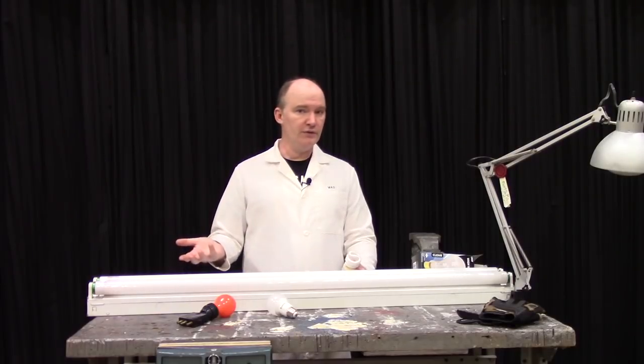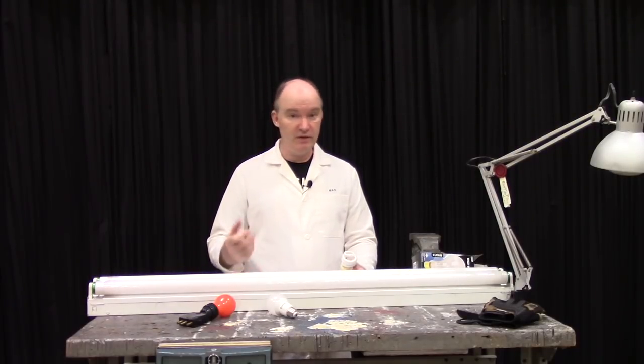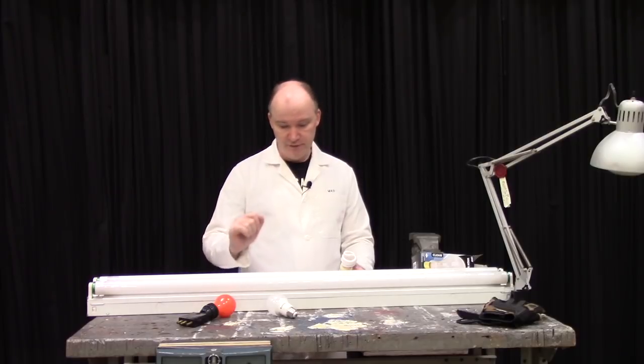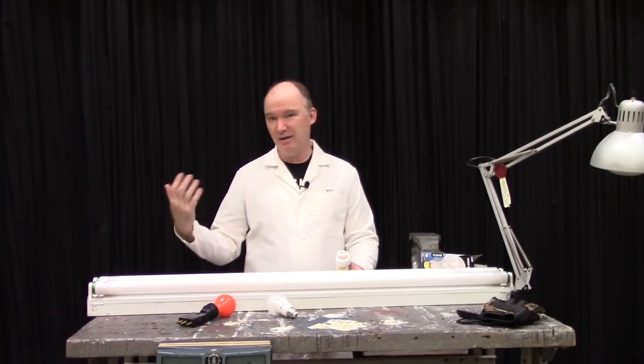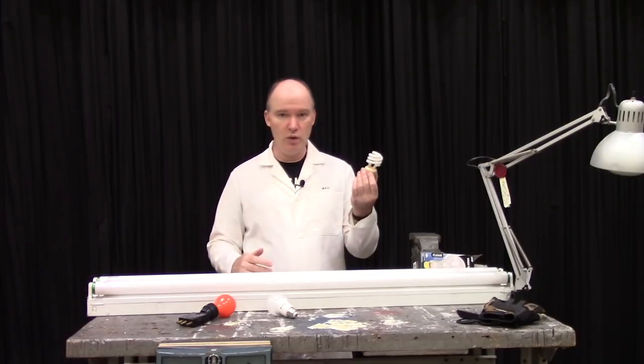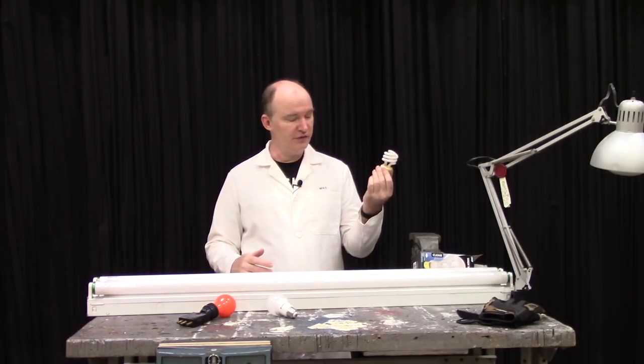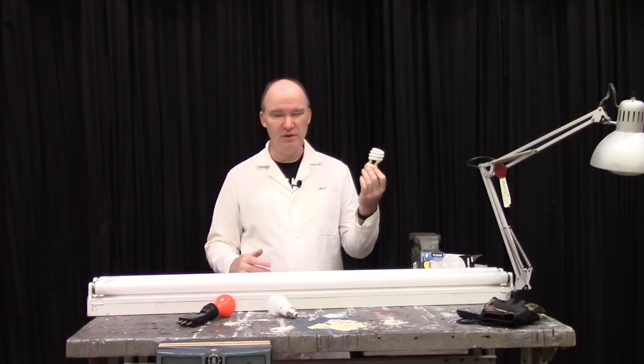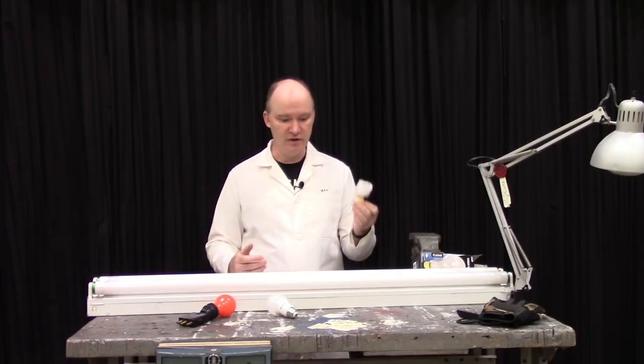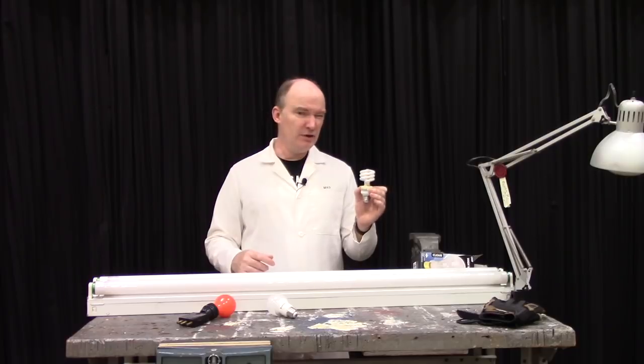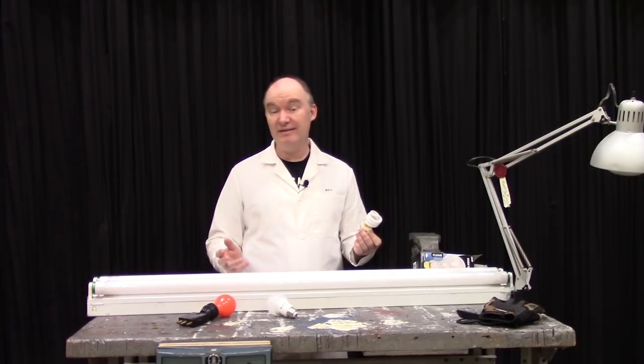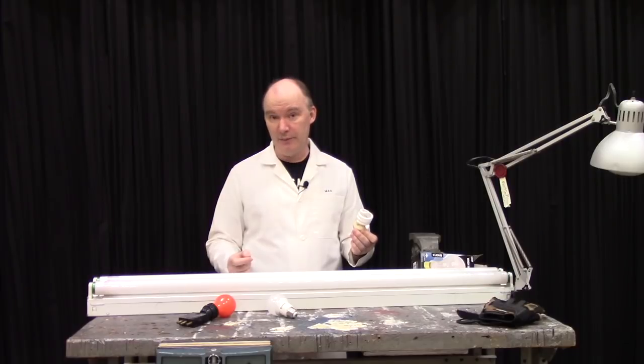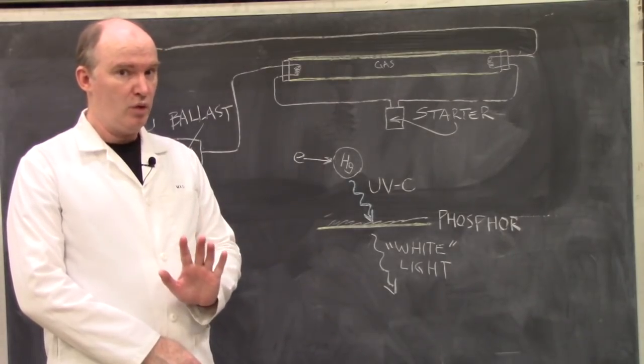So for all of those reasons, people started looking for other ways to produce light, and the first one we're going to talk about are fluorescents. These can take the form of these long tubes, like you see in classrooms or offices, or these little soft serve cone CFLs, which stands for compact fluorescent lamp, because, well, they're smaller. These turn about 22% of their power into light, which doesn't sound great, but it's a lot better than an old incandescent lamp.